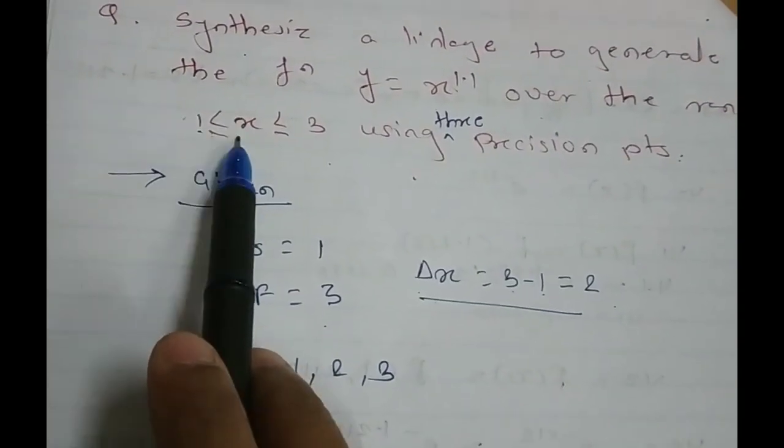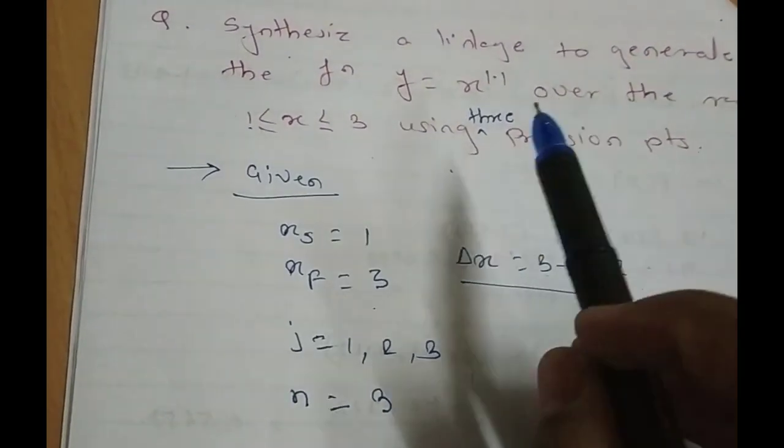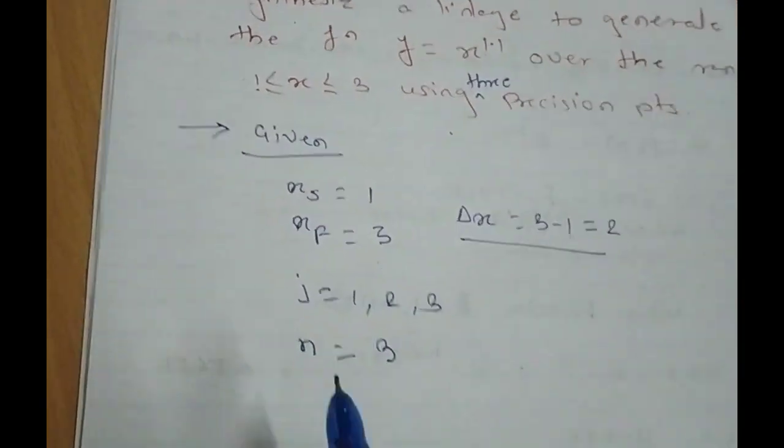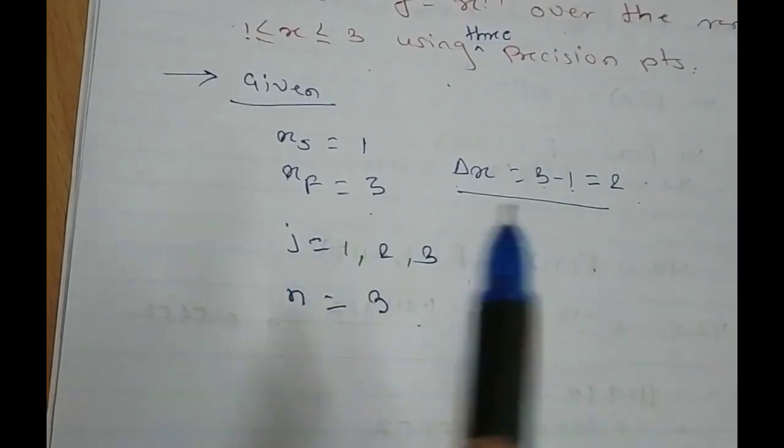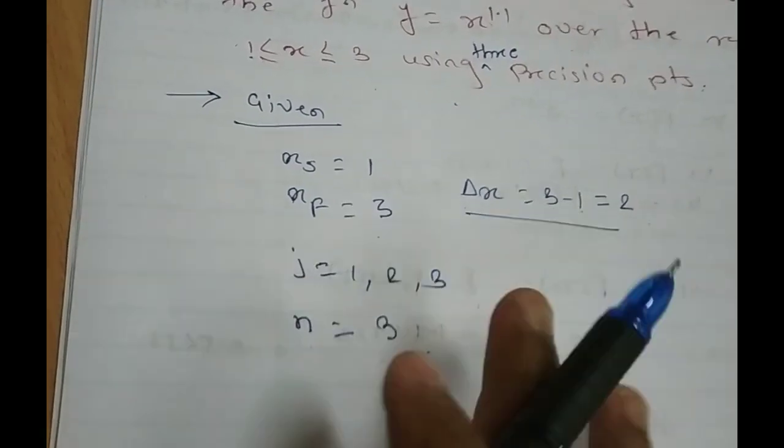We can take any number of points within this range, 1, 1.1, 1.2 and so on. So, I will just take 1, 2, 3 points. Then using 3 precision positions. So, n is equal to 3. We need to do for 3 precision positions.